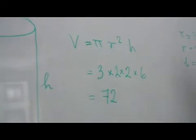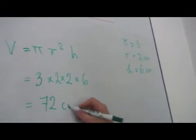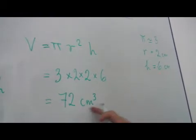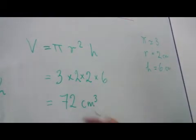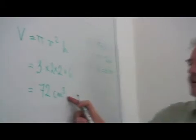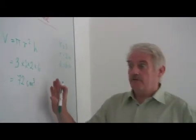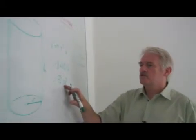Now this is a volume, so it's going to be centimeters cubed. Remember, always check your units afterwards, because if it's a volume it's centimeters cubed, but if it's an area, it's only centimeters squared.